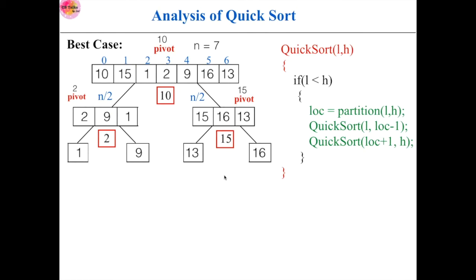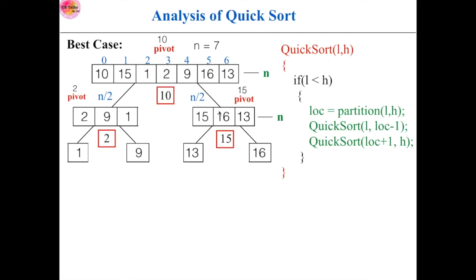You can call this a recursion tree. Now if you analyze this recursion tree, what the partition algorithm is doing is simply comparing the pivot element with all elements in the array. We have seven elements, so the time taken for level 0 is n. In the same way, time taken for level 1 together — left and right sub-arrays — is almost n, because each sub-array has n/2 elements. So partition takes n/2 for the left and n/2 for the right, giving n total for level 1.